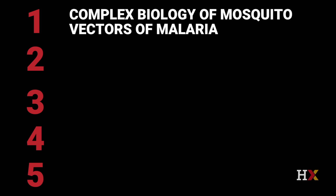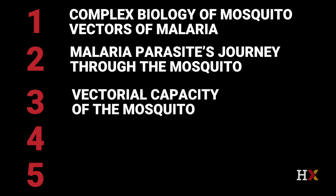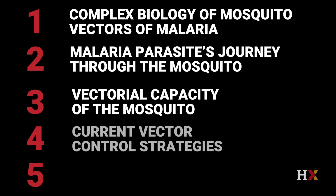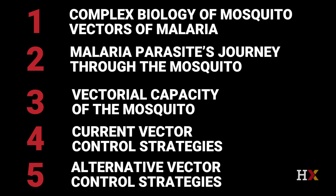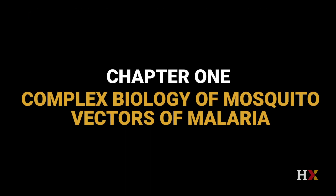The lecture is divided in five chapters. In the first chapter, I'll talk about the complexity of mosquito biology and how that influences malaria transmission. In the second chapter, I'll look at the journey of the Plasmodium parasites within the mosquito. In the third chapter, I'll introduce the concept of vectorial capacity, which is the interaction of the biological processes that are important for transmission. In chapter four, I'll discuss current methods available for mosquito control, while in chapter five, I'll discuss alternative strategies that might become available in the near future and might take us to malaria eradication. Let me start with chapter one and describe the complex mosquito biology and how that influences malaria transmission.